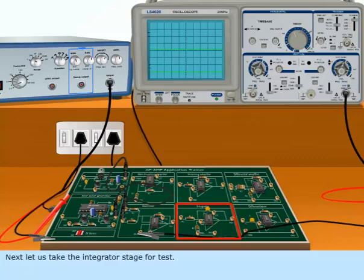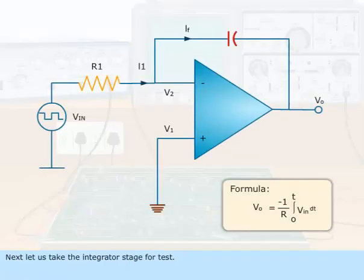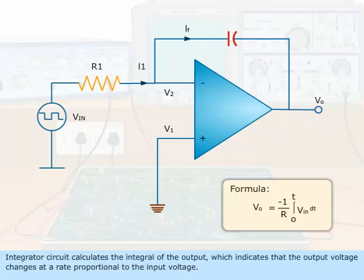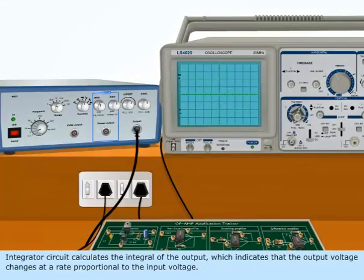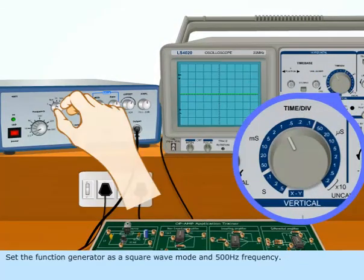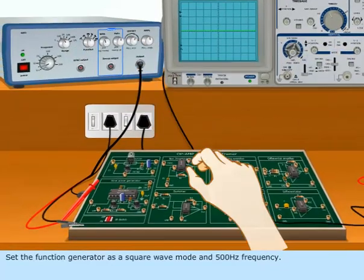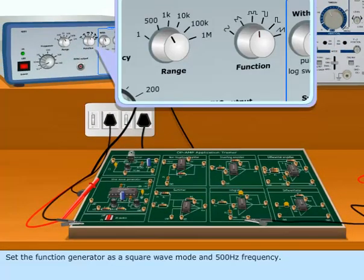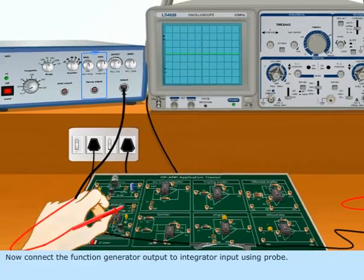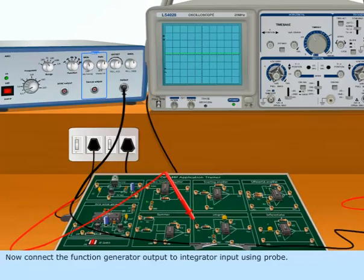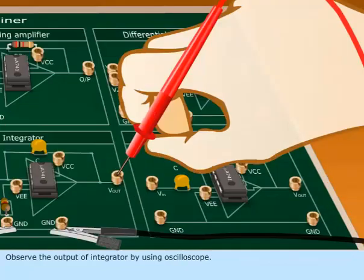Next, let us take the Integrator stage for test. The Integrator circuit calculates the integral of the output, which indicates that the output voltage changes at a rate proportional to the input voltage. Set the function generator to square wave mode at 500 Hz frequency. Connect the function generator output to the Integrator input using a probe, and observe the output of the Integrator using the Oscilloscope.